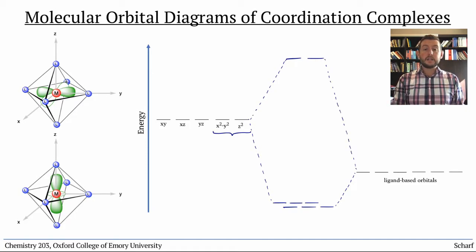In addition, the dz² orbital's torus - the hula hoop around its middle section - also points to the four ligands in the x-y plane a little bit. This means that all the ligands interact with the dx²-y² and dz² orbitals. So the ligand orbitals all go down in energy, and those two d orbitals go up in energy.